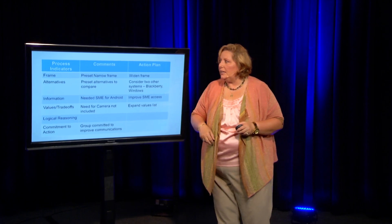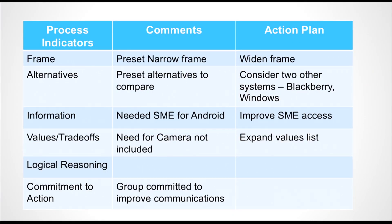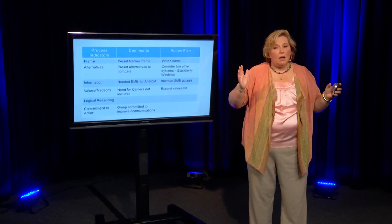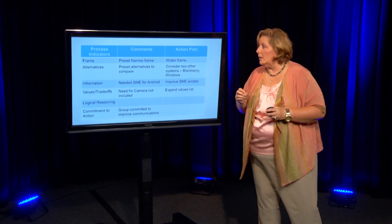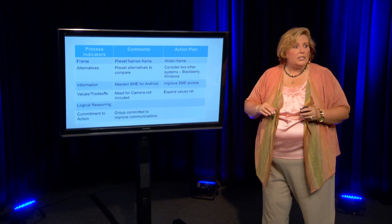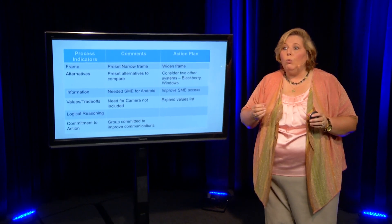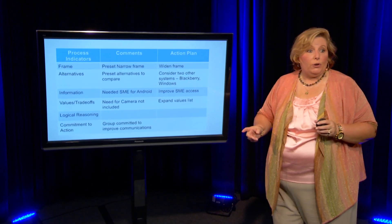First, we're going to look at our process indicators. These are the gaps that we found. We found that the frame, even though it was predefined, was very narrow. One of the lessons learned is that at our next opportunity for decision planning, we need to widen our frame and think more globally in terms of what our problem is. Secondly, we need to expand our alternatives. Even though they gave us a very narrow alternative set, would there have been harm in exploring it further by looking at BlackBerry or Windows — or maybe another alternative someone could have brought forward?